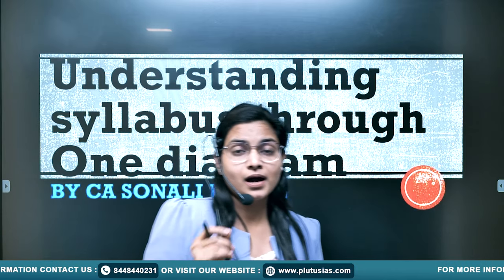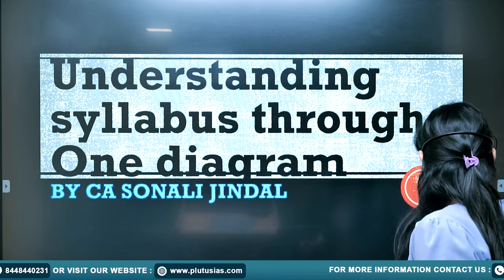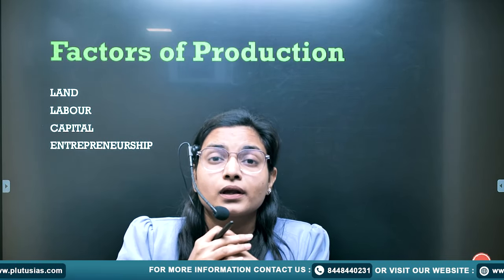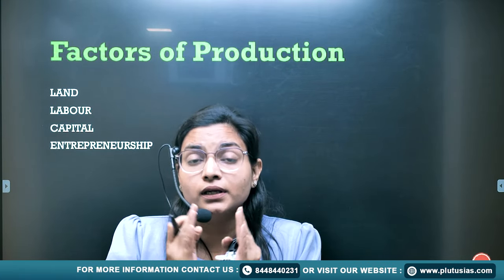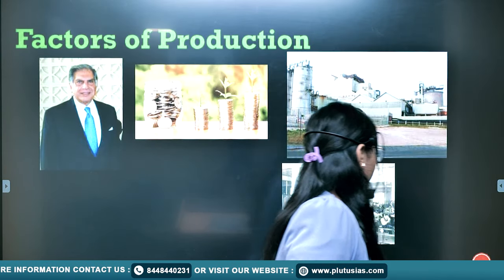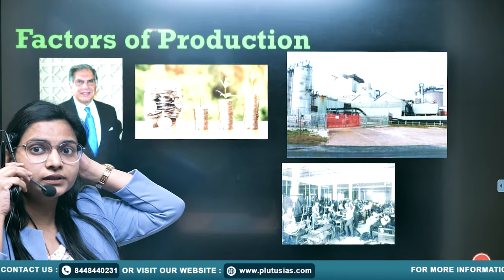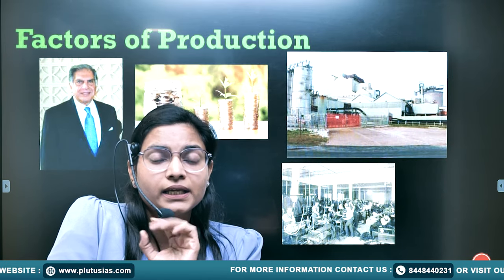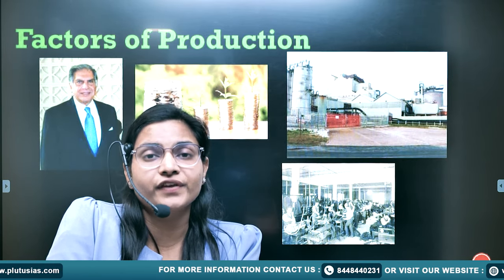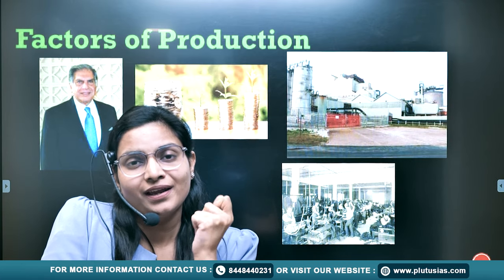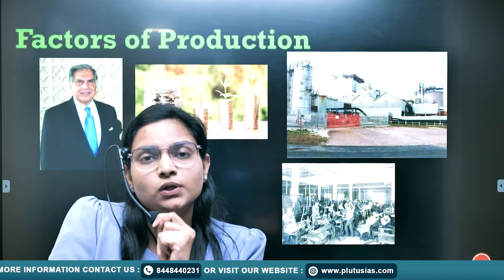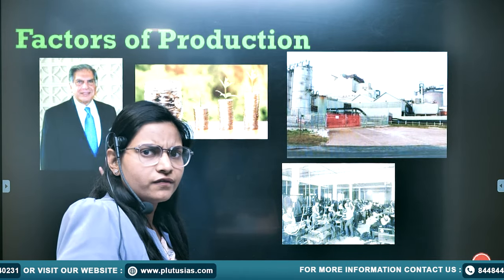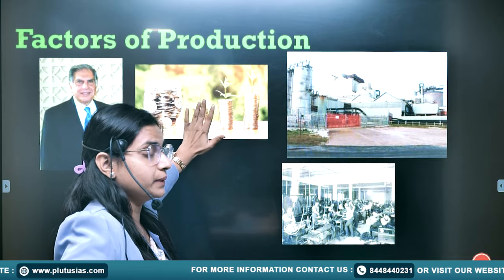You must have heard about the factors of production. We are starting our video through the factors of production. You have to think about one entrepreneur — I am taking the example of Ratan Tata Ji. Some innovative idea has come to his mind, like he will open one factory. For opening the factory, there is a need of an entrepreneur like Ratan Tata, and obviously he also needs the money.